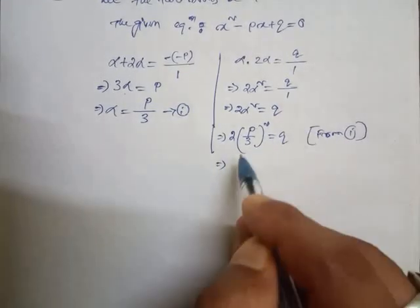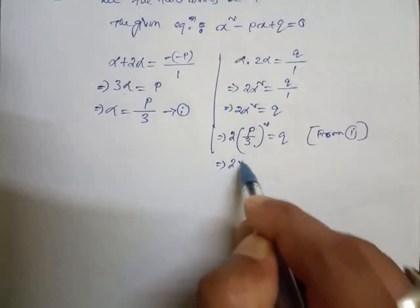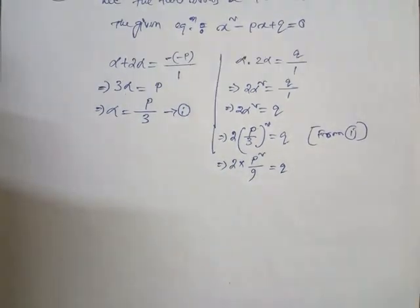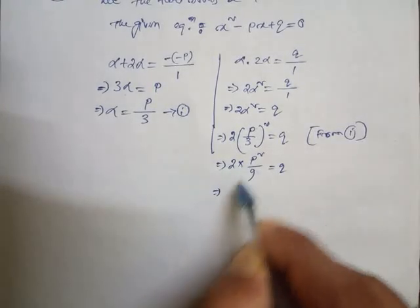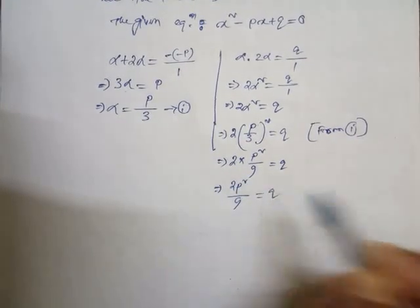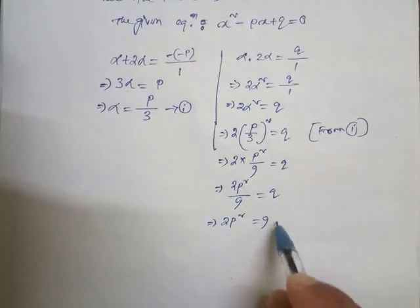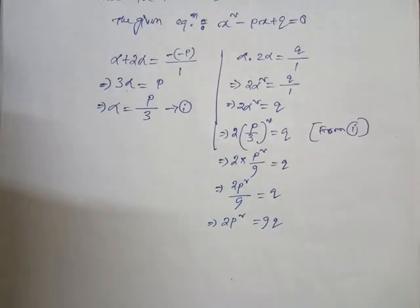Now look student, after that, 2 into p squared and 3 squared is 9 equal to q. Next one, 2p squared by 9 equal to q. And 2p squared equal to 9q. This is the condition.